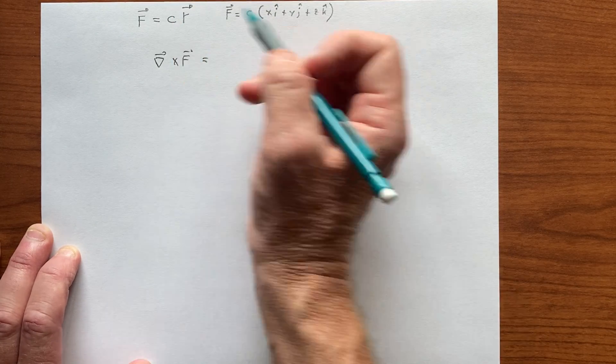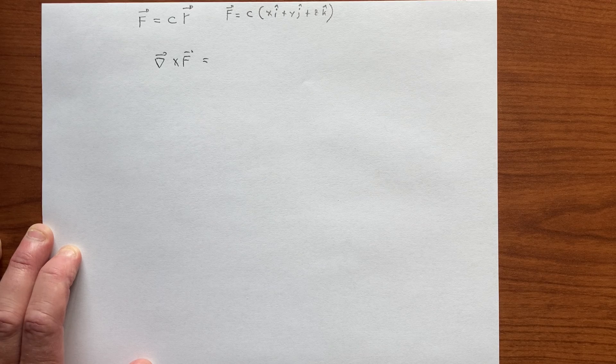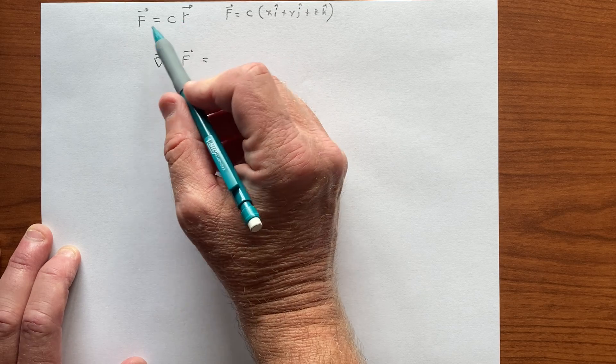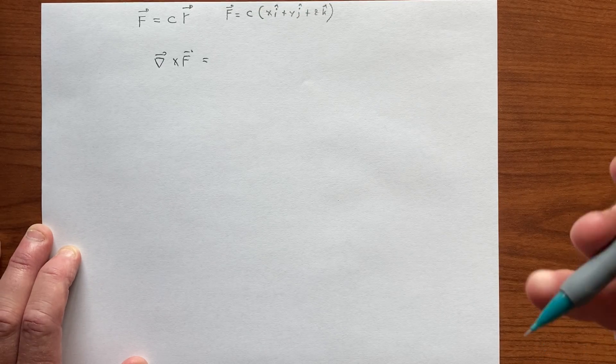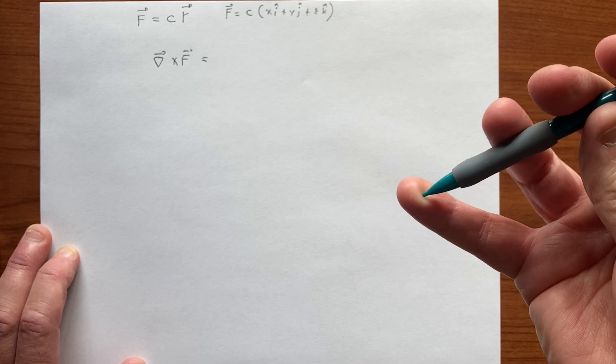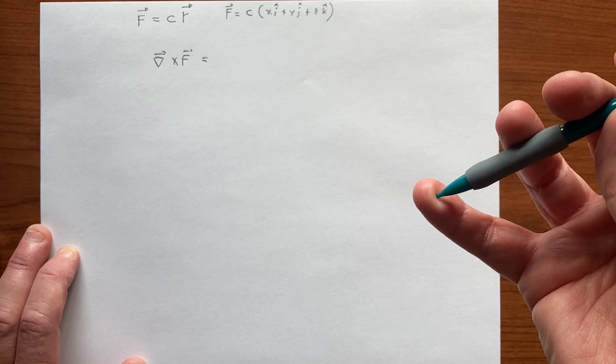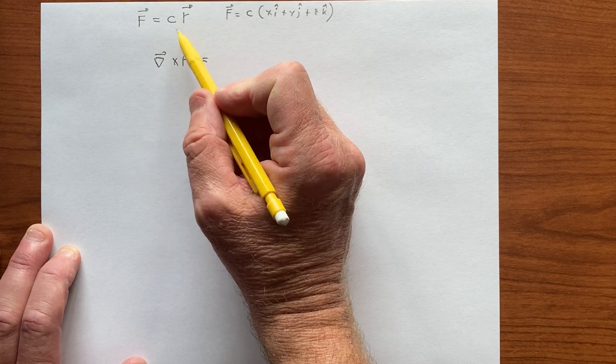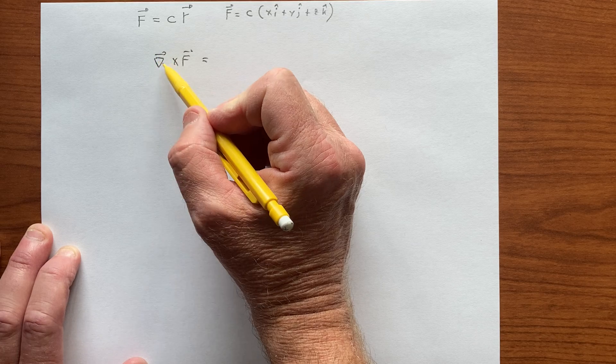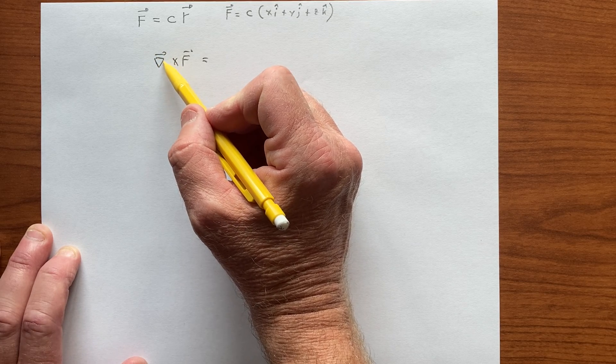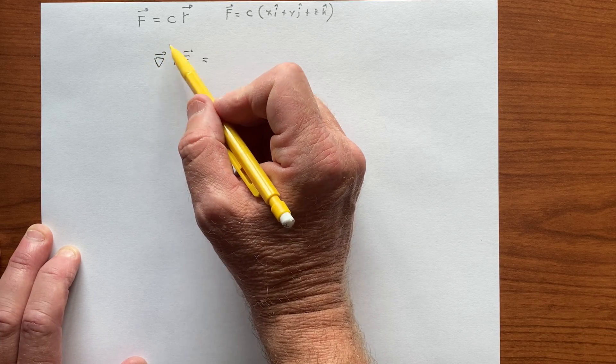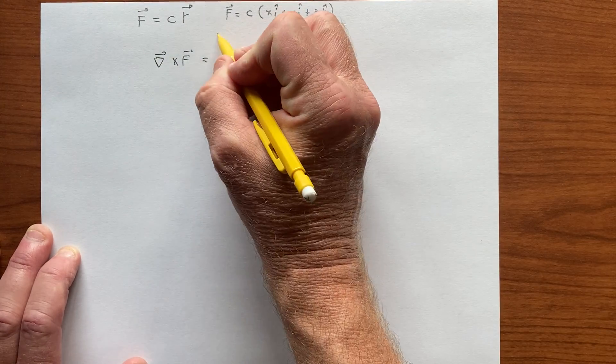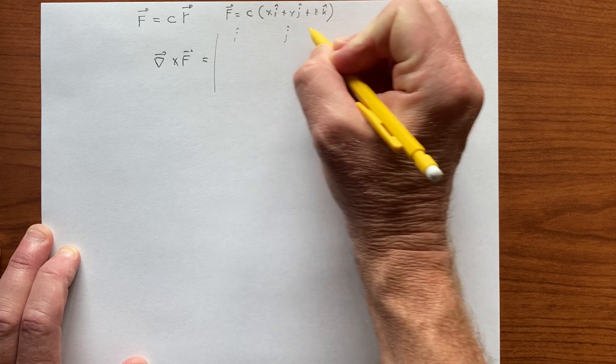But if we decide to write this in spherical coordinates, then this force field would have an R component, a radial component, and we take derivatives. When we do this for spherical coordinates, this would require derivatives of the other components of a function of R. And so we can see that that's zero, but if we do it in Cartesian coordinates, we'll see the same thing. It'll just be more familiar to us.